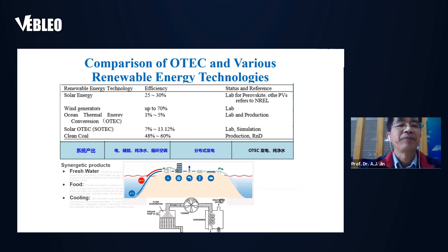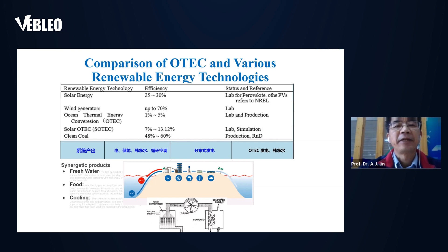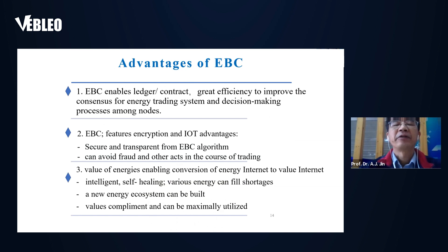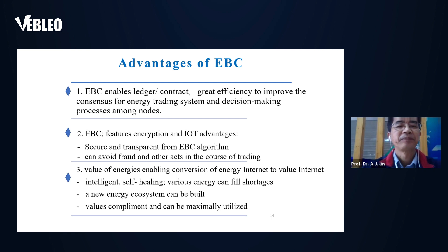Here is a comparison: this slide shows OTEC versus other clean energy. The first row is solar energy, the second row is wind power, and the third row is OTEC, and so on. The columns show each clean technology and the efficiency achieved. Under the advantages of EBC, there are three key points: first, the energy blockchain enables smart contract ledgers and has great efficiency. They are very convenient in providing consensus for users and suppliers to reach a deal.